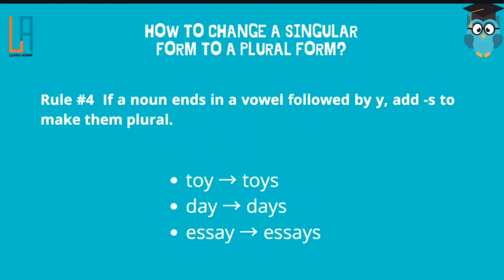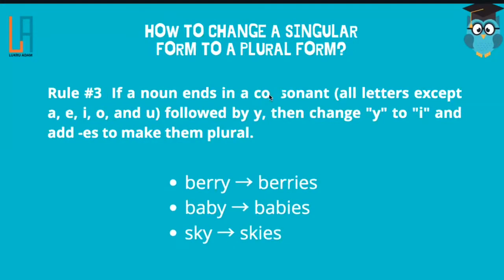Rule number four: if a noun ends in a vowel followed by Y, just add S to make them plural. In rule three it was a consonant; rule four is a vowel. For example, if you have O followed by Y, just add S. Another example: day — it has letter A and then Y, so just add S. Another example is essay — also ends in A-Y, so just add S. No need to change Y to I. You only change Y to I if the letter beside Y is a consonant.